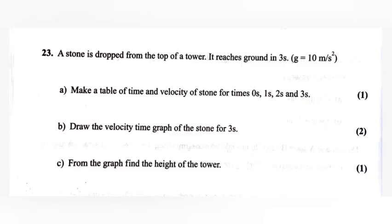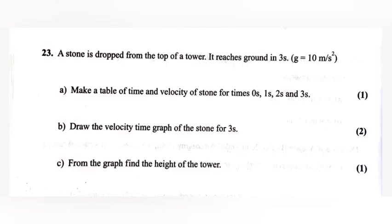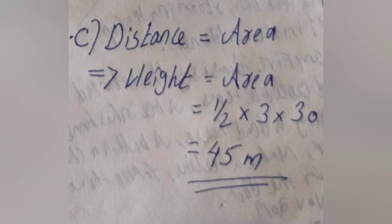Part b: Draw the velocity-time graph of the stone for 3 seconds. Part c: From the graph, find the height of the tower. Answer: Distance = area under graph, so height = ½ × 3 × 30 = 45 meters.